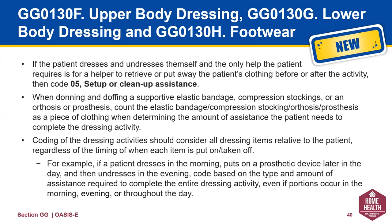For 130F, 130G, 130H — upper and lower body dressing and footwear — if the patient dresses and undresses themselves and the only help they require is to retrieve or put away clothing before or after the activity, code O5. When donning and doffing a supportive elastic bandage, compression stocking, orthosis, or prosthesis, count these items as a piece of clothing when determining the amount of assistance the patient needs to complete this dressing activity. Coding should consider all dressing items relative to the patient, regardless of the timing when each item is put on or taken off. For example, if the patient dresses in the morning, puts on the prosthetic later in the day, and undresses in the evening, code based on the type and amount of assistance required to complete the entire activity, even if the portions occur at a different time of the day.